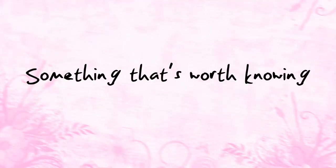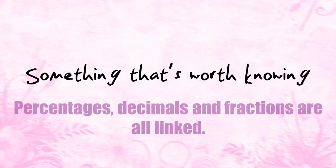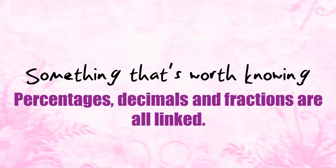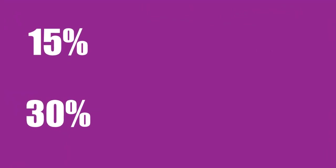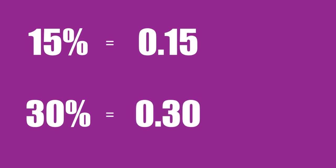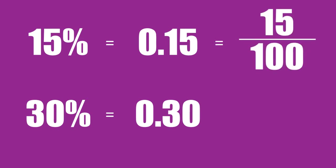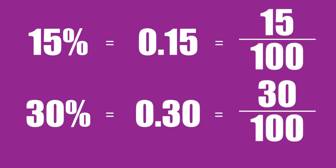The other thing that's worth knowing is that percentages, decimals, and fractions are all closely linked and very often show the same information. You've already seen that fifteen percent is the same as 0.15, and that thirty percent is the same as 0.30. Well, these are also the same as fifteen hundredths and thirty hundredths if you wanted to show them as fractions.